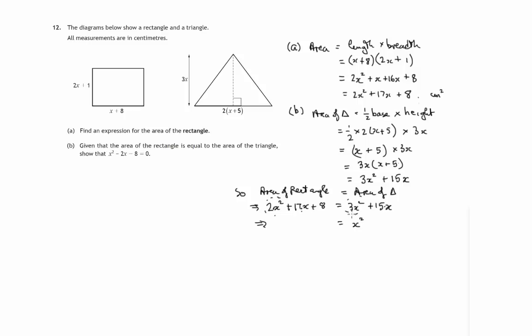So that 17x disappears. 15x minus 17x is minus 2x. And let's subtract 8 from both sides. So that 8 disappears.